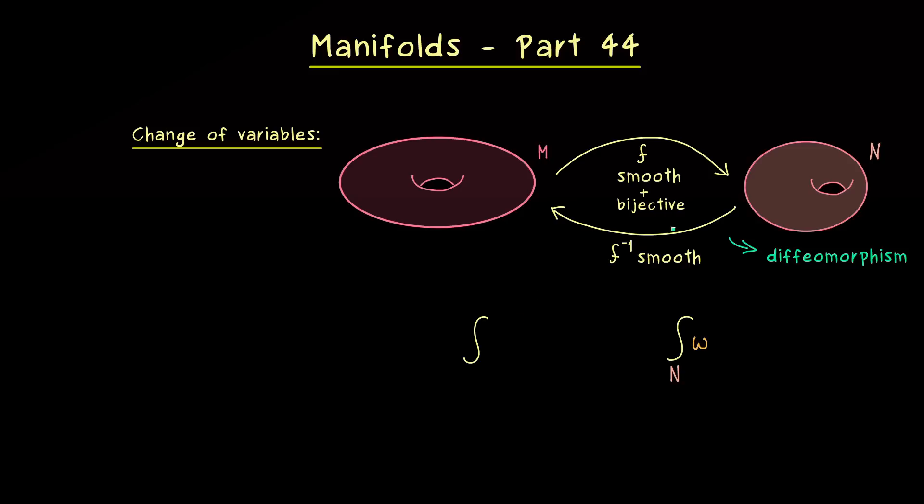And then we already know, in order to get a volume form on M, we can just use the pullback with respect to f. This means we have f star omega on the left-hand side, and there the integration domain is simply the manifold M. And now it turns out that these two integrals give exactly the same value. And it is called change of variables because we go from the variables on N to the variables on M.